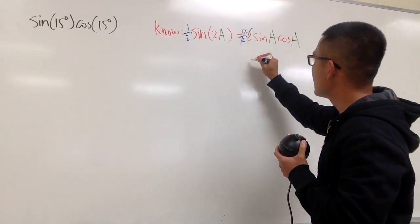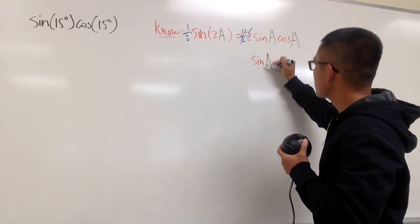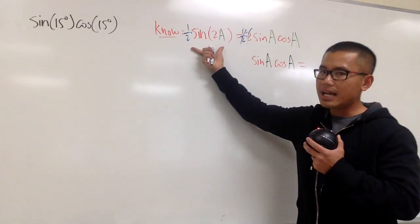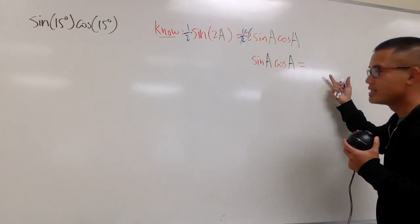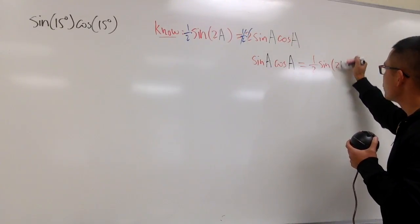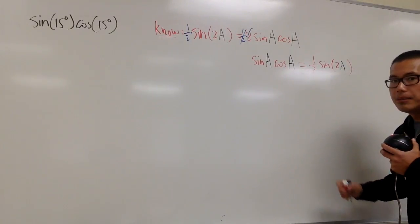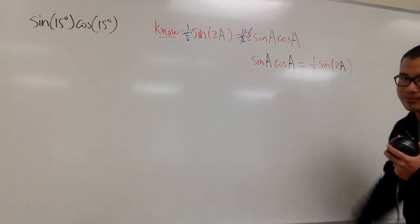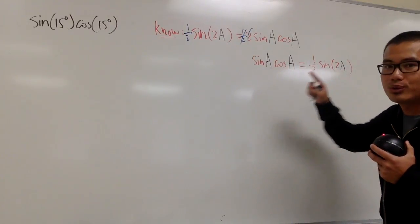Namely, I can tell you sine a times cosine a will be the same as that. And let me put this down onto the right-hand side for you guys, which is 1 half times sine of 2a. And be sure that 2a is now the angle instead of the sine right here. And this is what we are going to utilize.